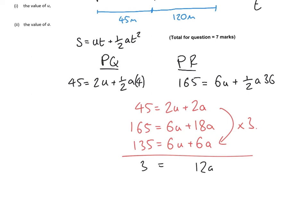We get 12A equals 30, so A equals 2.5. That's the answer to the second part.